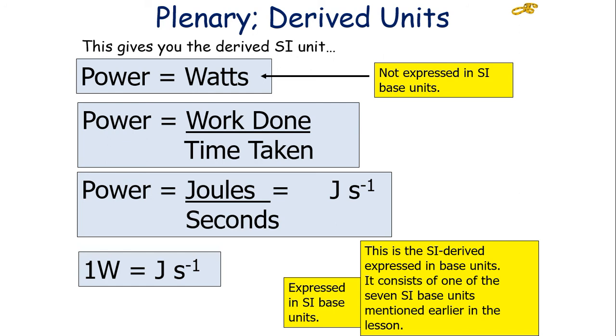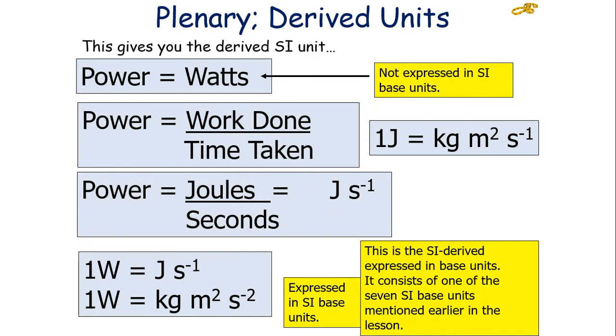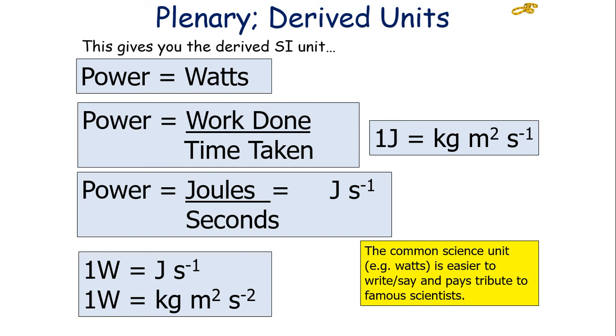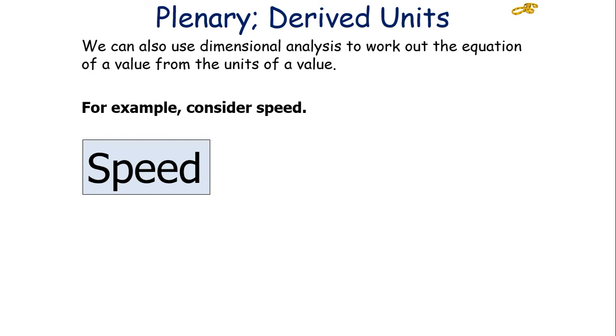What you've got to do is break it down further to get into the base units. So what you've then got to say is look at what one joule is. Work done is force times by distance, and force is mass times acceleration. So you can work out the base units of the joule by doing that particular equation. You substitute it in, and you get your answer to be kilogram metres squared seconds to minus two. The common scientific unit is easier to say, and it pays tribute to the famous scientist. The SI-derived unit is a more fundamental way of representing the quantity and allows you to understand what measurements need to be made in an investigation.